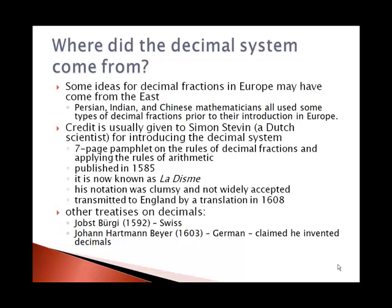Credit is usually given to Simon Stevin, a Dutch scientist, for introducing the decimal system in Europe. It was a 7-page pamphlet he wrote on the rules for decimal fractions and applying the rules for arithmetic. It was published in 1585, had a longer title, but is known as La Diem — a French phrase meaning a tenth. His notation for decimals was very clumsy and not widely accepted.